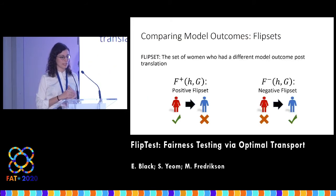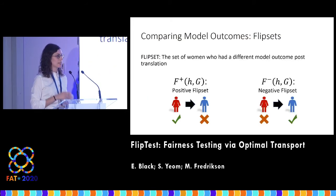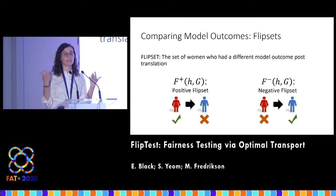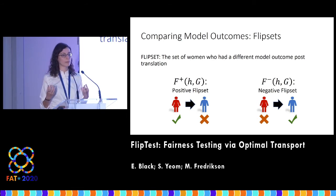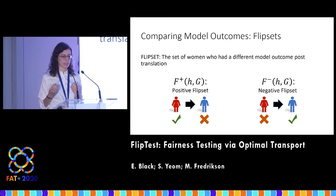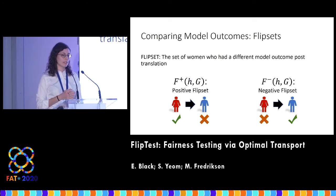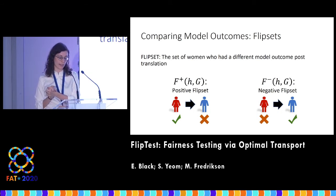So how exactly do we compare outcomes? This is another crux of the process. We look at something called the flip set, which we define to be the set of people whose model outcome changes post-translation — the women who are hired as women but not as men, or the women who are not hired as women but were hired as men.